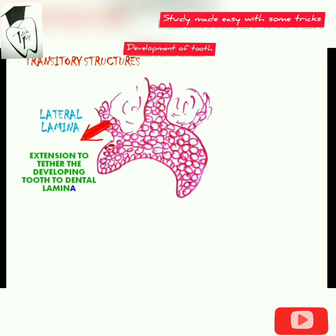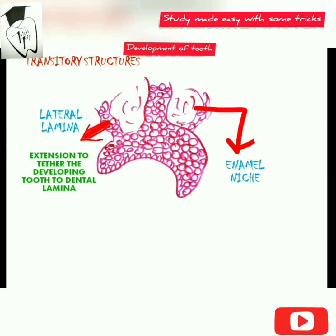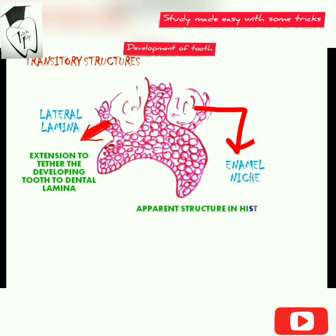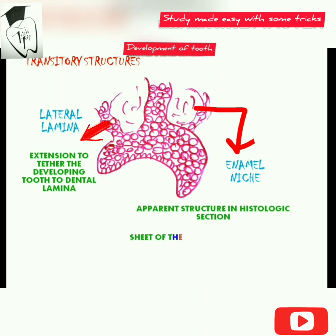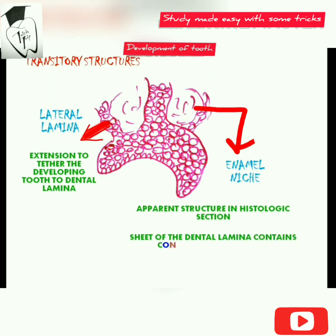The next transitory structure is the enamel niches. These are apparent structures in the histological section created because seeds of the dental lamina contain a concavity filled with connective tissue, giving the impression that the tooth germ has a double attachment to the oral epithelium by two separate strands. They are formed by an illusion in the histological section.